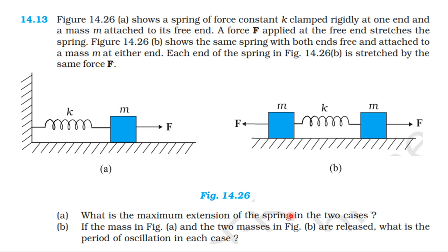First question: what is the maximum extension of the spring in the two cases? Second question: if the mass in figure A and the two masses in figure B are released, what is the period of oscillation in each case?